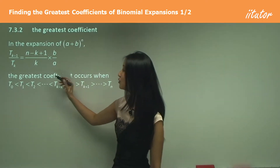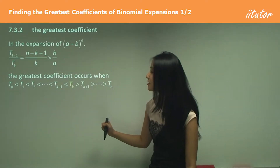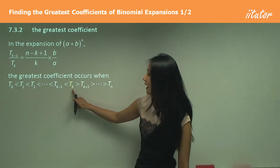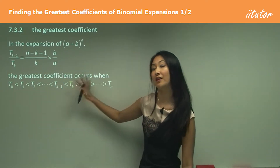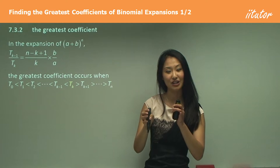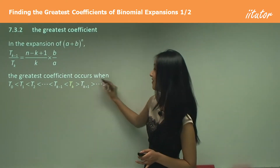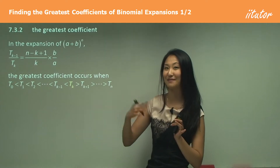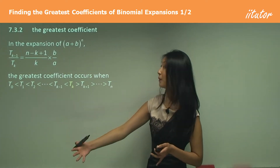We're going to use that ratio to find out when a coefficient is bigger than the numbers on either side. That's how we use the ratio — we see it's going to be bigger than the one before and also bigger than the one after. It may not make the most sense right now, but I think it'll make more sense as we do the questions.